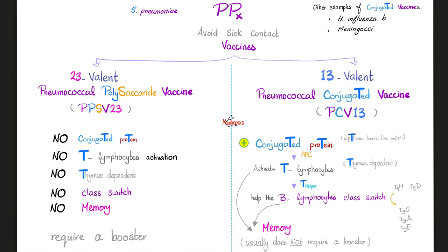The T-lymphocyte gets activated — it lives in the thymus, so it is thymus-dependent. The T-lymphocyte can help other T-lymphocytes or its neighbor, the B-lymphocyte. When you help the B-lymphocyte, they mature, class switch, giving all kinds of antibodies, make plasma cells, and make memory cells.